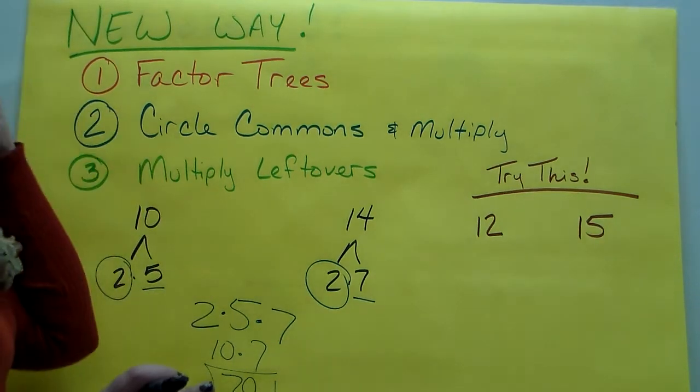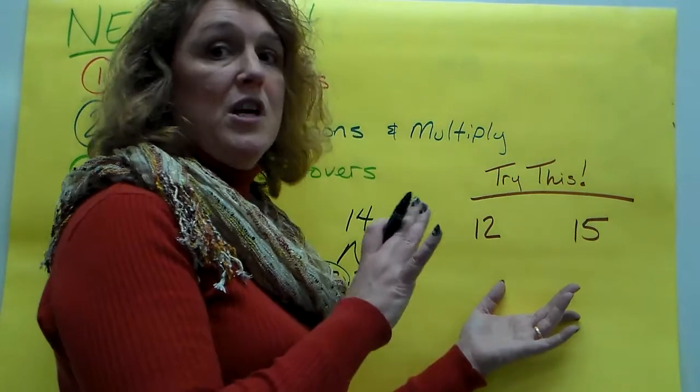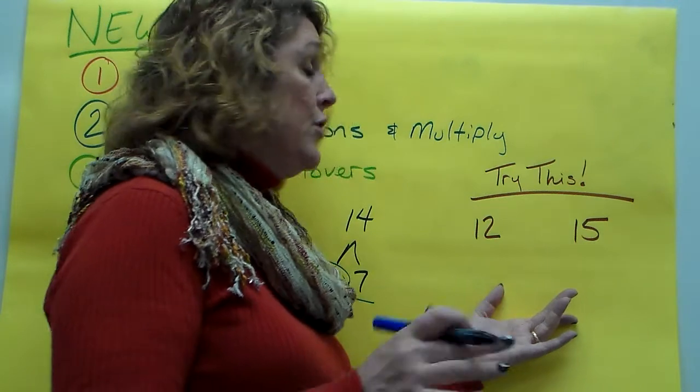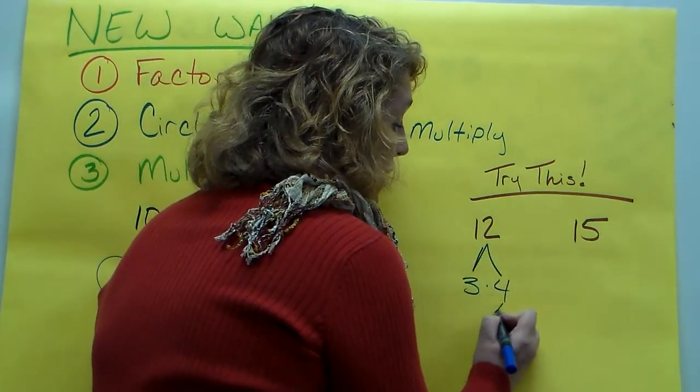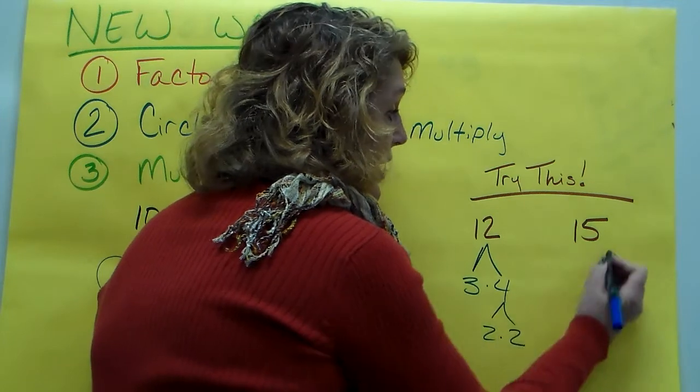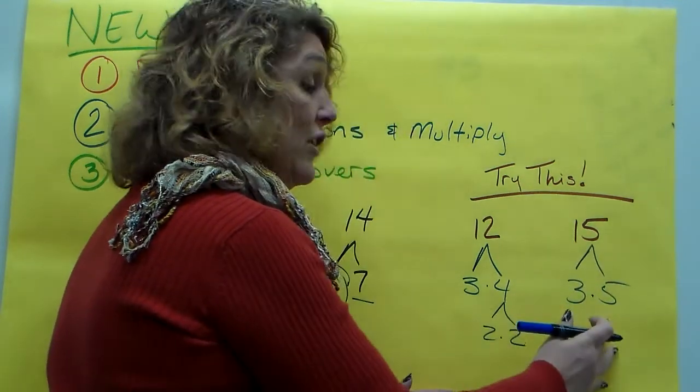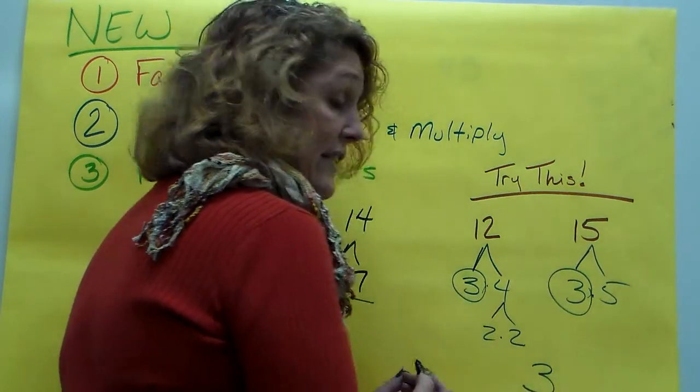Let's try it again. I've got 12 and I've got 15 and we need the least common multiple. So it's a number that's going to be bigger than this that both 12 and 15 go into. So we're going to start with a factor tree. This is 3 times 4 and that's 2 times 2. This is 3 times 5. So we're going to start by seeing what they have in common. Right now they've got a 3 in common. I'm going to write that down.